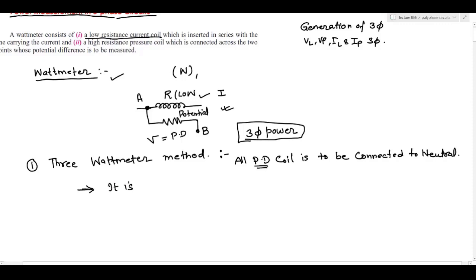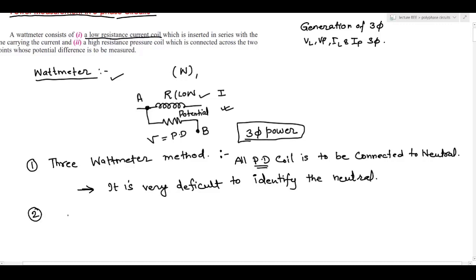In some three-phase circuits it is very difficult to identify the neutral. That is one problem. Another problem is that using three wattmeters is not the most efficient circuit. The power can also be measured by the two wattmeter method. We can easily measure power using only two wattmeters, and the main advantage is that it can be used for both balanced and unbalanced loads.